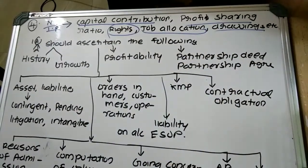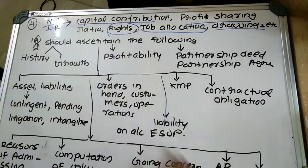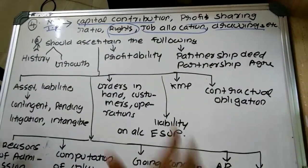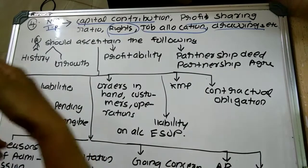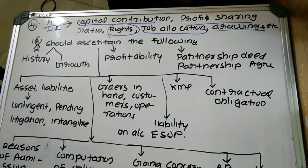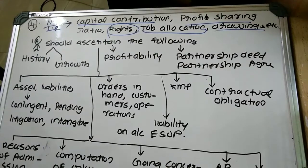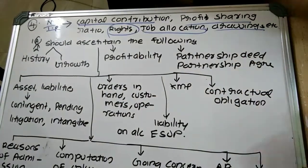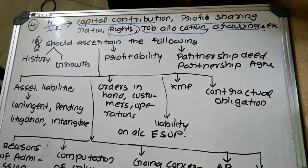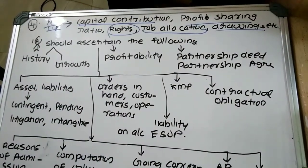An investigating accountant performing investigation on behalf of a new or incoming partner has to follow the following steps. The general approach for these kinds of investigations will be similar—he can be appointed as a new partner in a medium-sized, small-sized, or large-sized firm, but the procedure will not differ. This is the general approach irrespective of the size and nature of the firm.